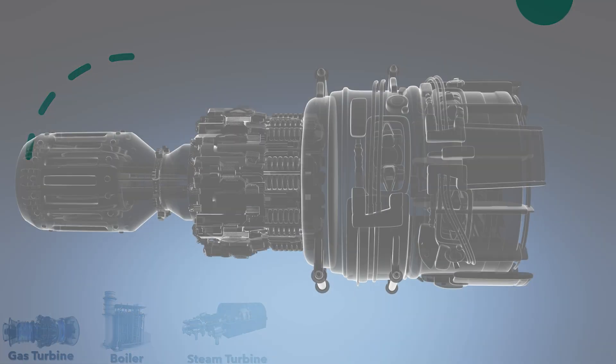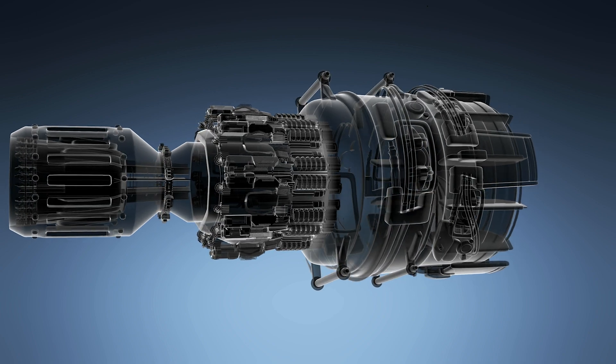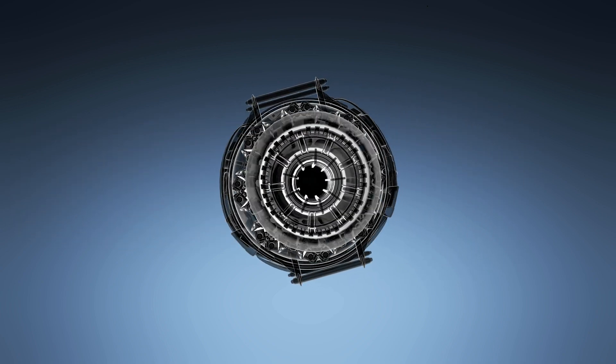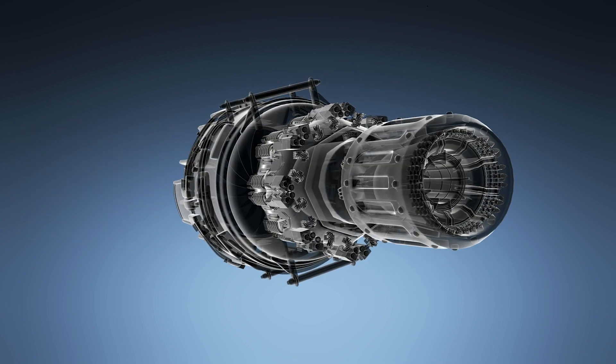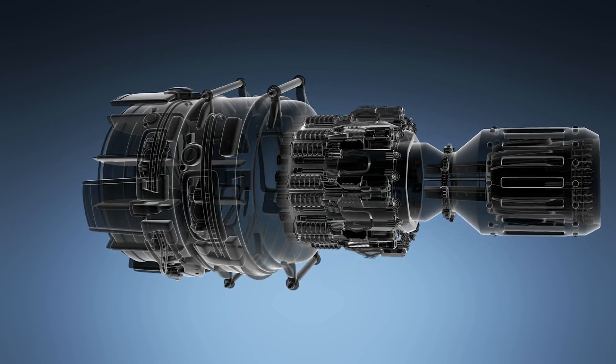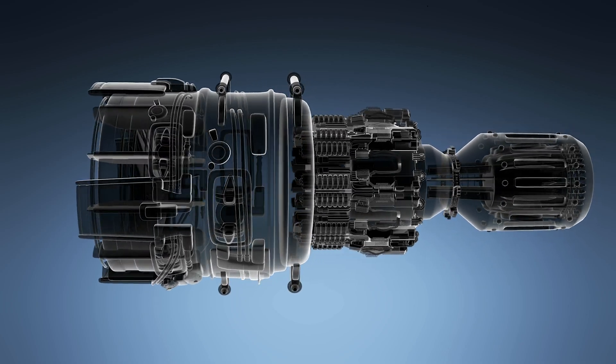The steam turbine converts the heat energy of steam into mechanical energy. The generator then converts the mechanical energy into electric power.